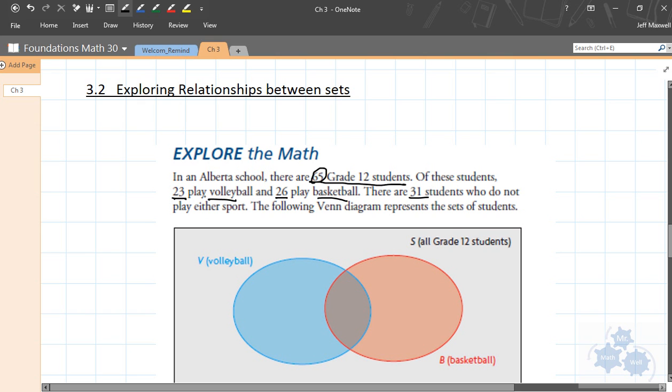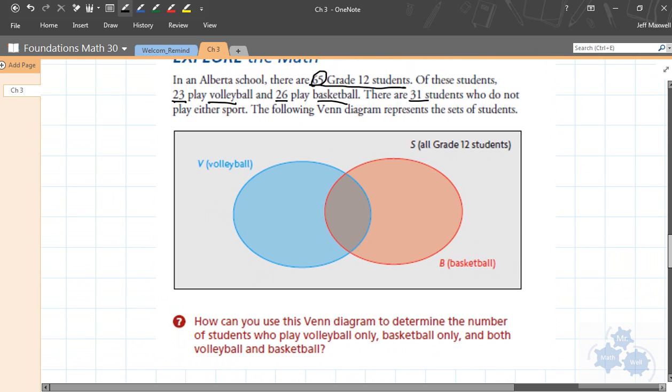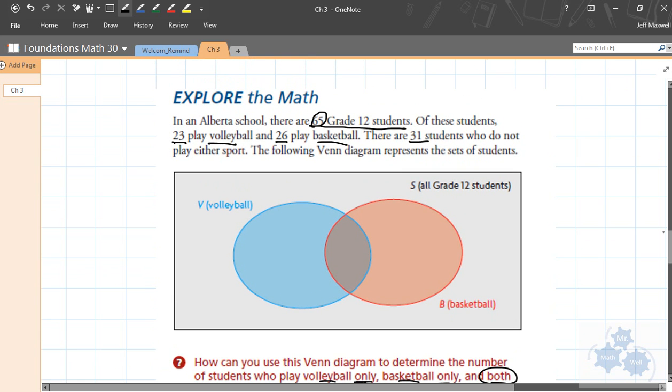We've got numbers here, and it might seem like all we've got to do is just put these numbers in the regions of the Venn diagram and we'll be done. This is the Venn diagram for the situation, and the question is, how can we use the Venn diagram to determine the number of students who play volleyball only, basketball only, and both volleyball and basketball?